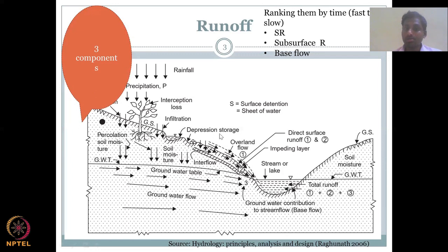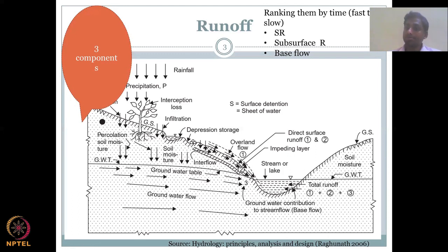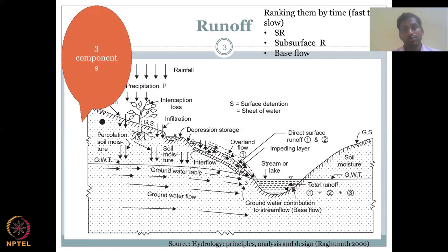The groundwater contribution is very slow, but this gives an opportunity to slow down water loss from the system. If your precipitation joins the river directly and it is a running river or stream, the water is lost from the system quickly. However, if it goes through the base flow, it can delay that loss.